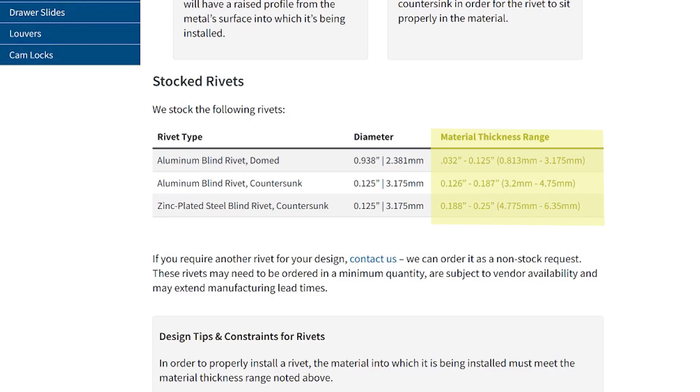Let's talk design tips and constraints. The main thing to keep in mind is that for any rivet to be properly installed, the material in which the rivet is being installed must meet material thickness requirements. We've got this noted on our website. You can choose rivets for any of our types of sheet metal that we stock.